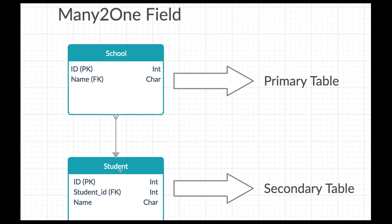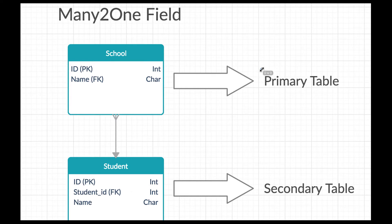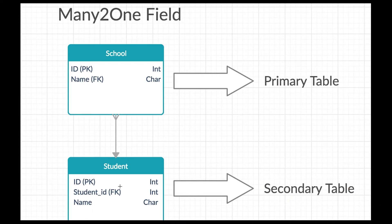In the School table, there is an id as a primary key of type integer, and a school name as a character field. In the Student table, id is the primary key of type integer, and there is a student_id column which is a foreign key referencing the School table of type integer, and a name column of character type for storing the student's name. School is the primary table and Student is the secondary table. We have to use the school table data in the student table as a foreign key.